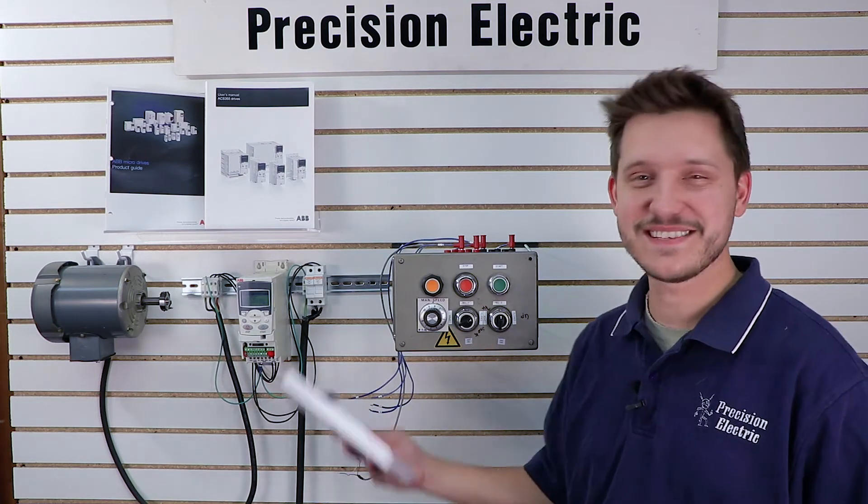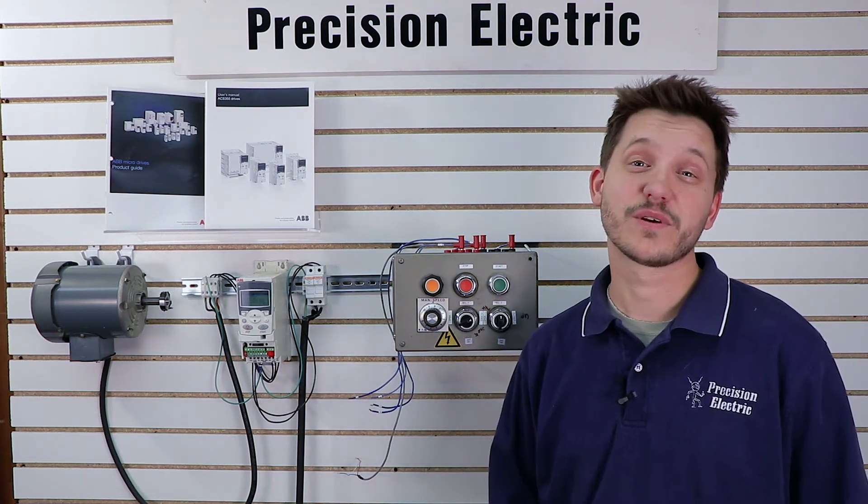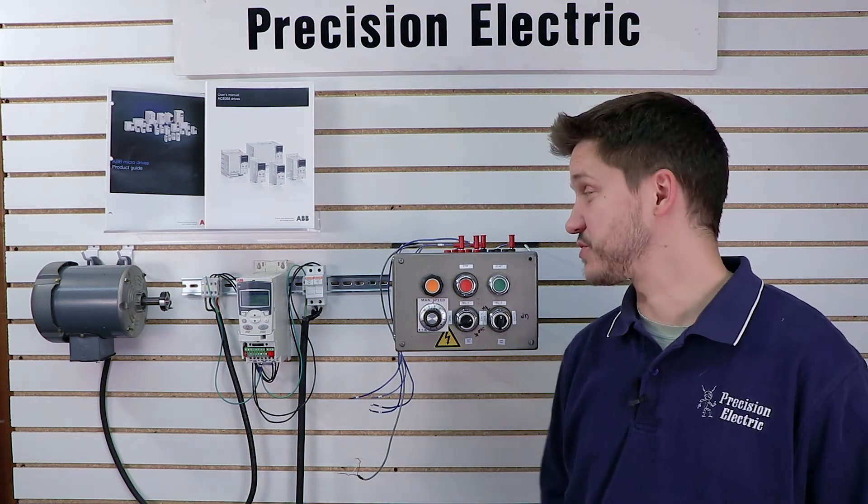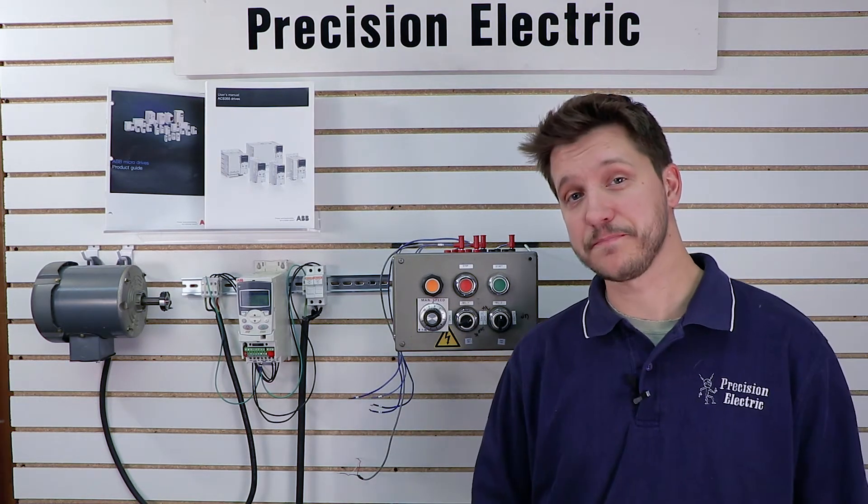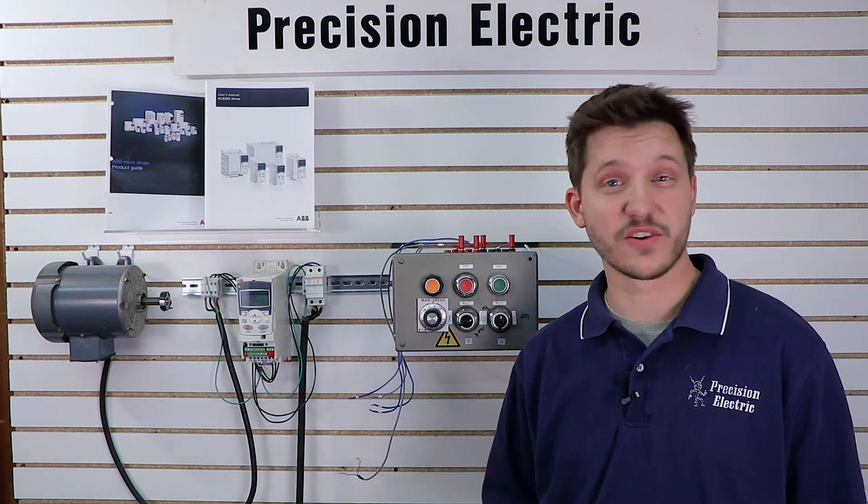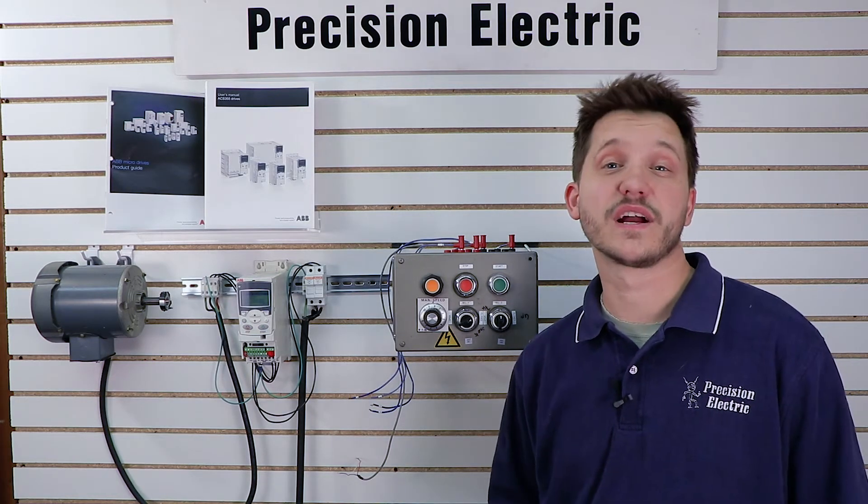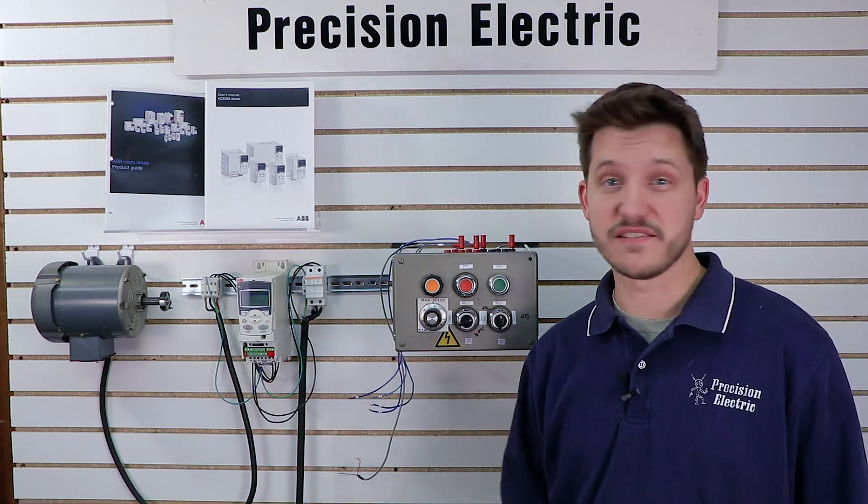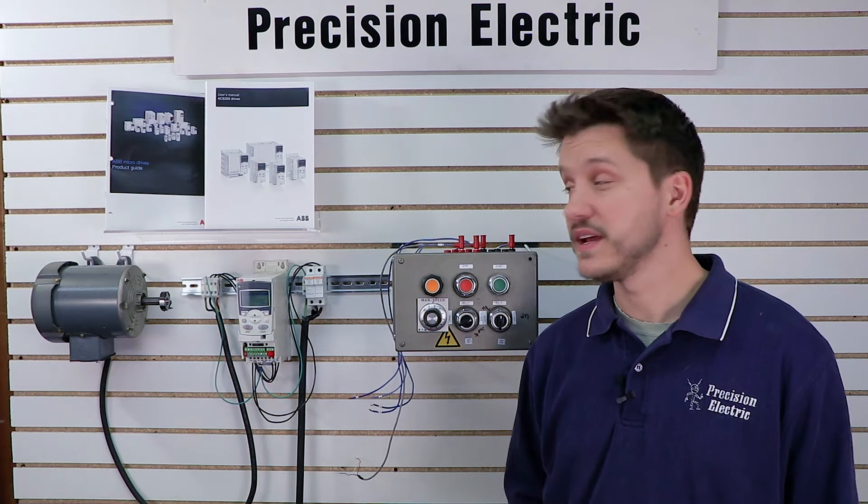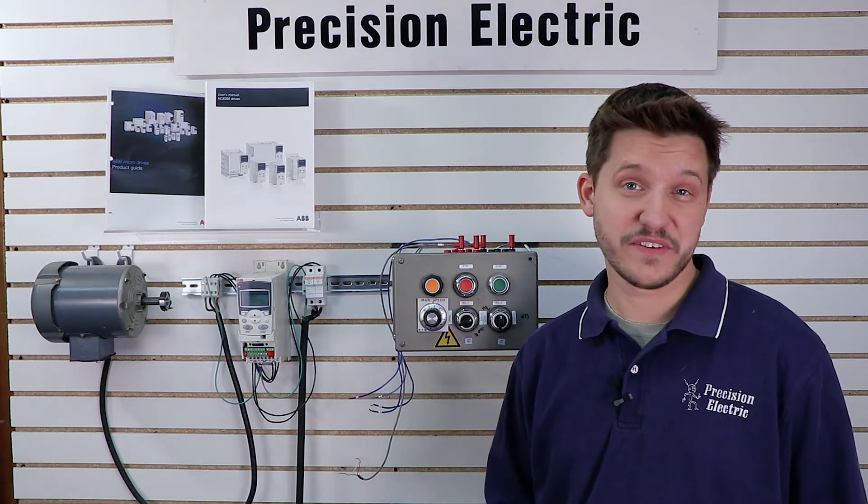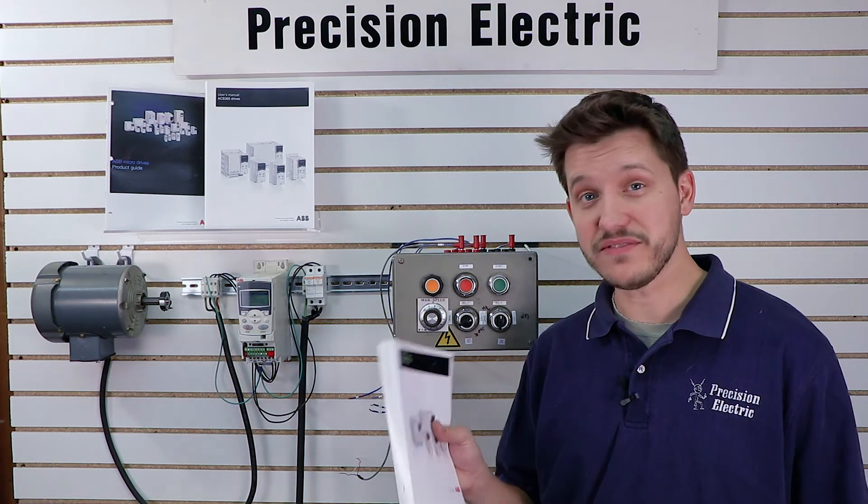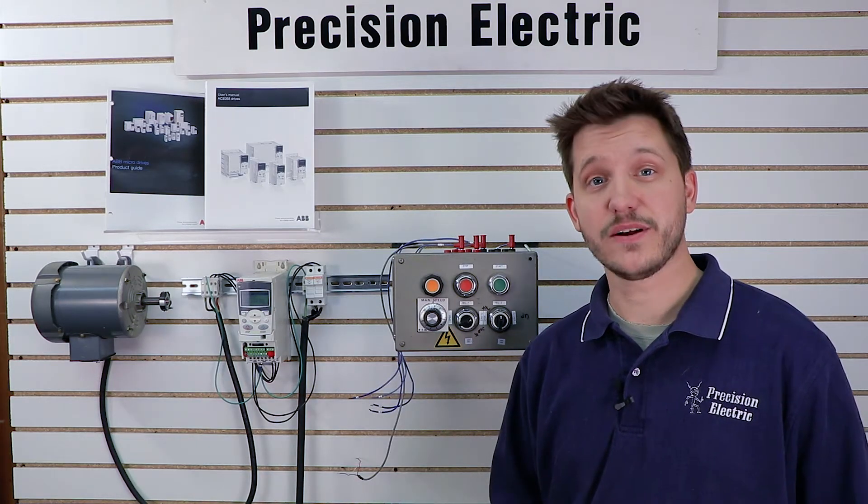Today's video in the ACS-355 series, we're going to be covering basic startup. Basic startup essentially is being able to run your motor from your keypad. We're not going to be going into actually wiring start-stop control just yet, we're not going to be wiring external speed references like speed pots just yet, this is a very basic commissioning video, and the cool thing about the 355 is it has a startup assistant, so we actually won't even need the manual for this video. So let's go ahead and get started.